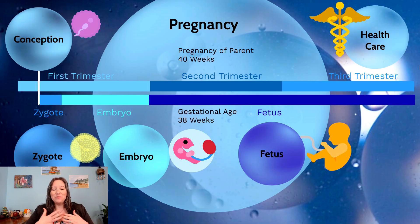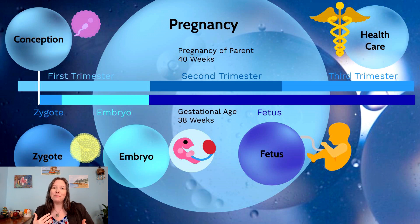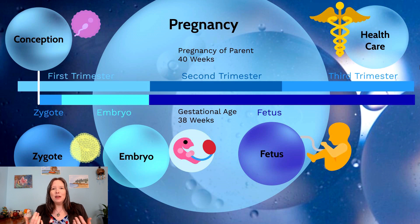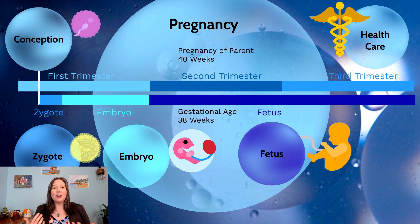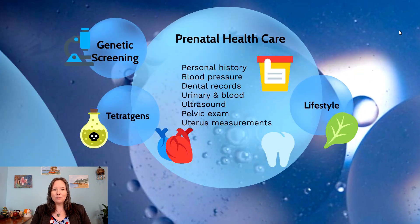We're back, and we just finished talking about our periods of the zygote, embryo, and fetus. What else do we need to talk about in terms of pregnancy? We have to talk about how health care and pregnancy can have a marked influence on our prenatal development.